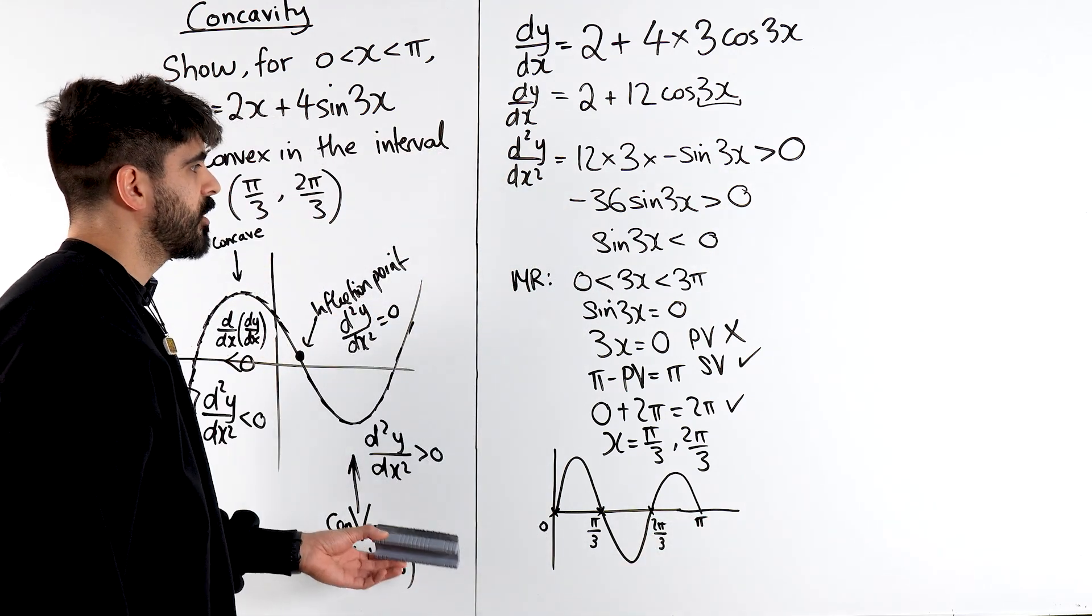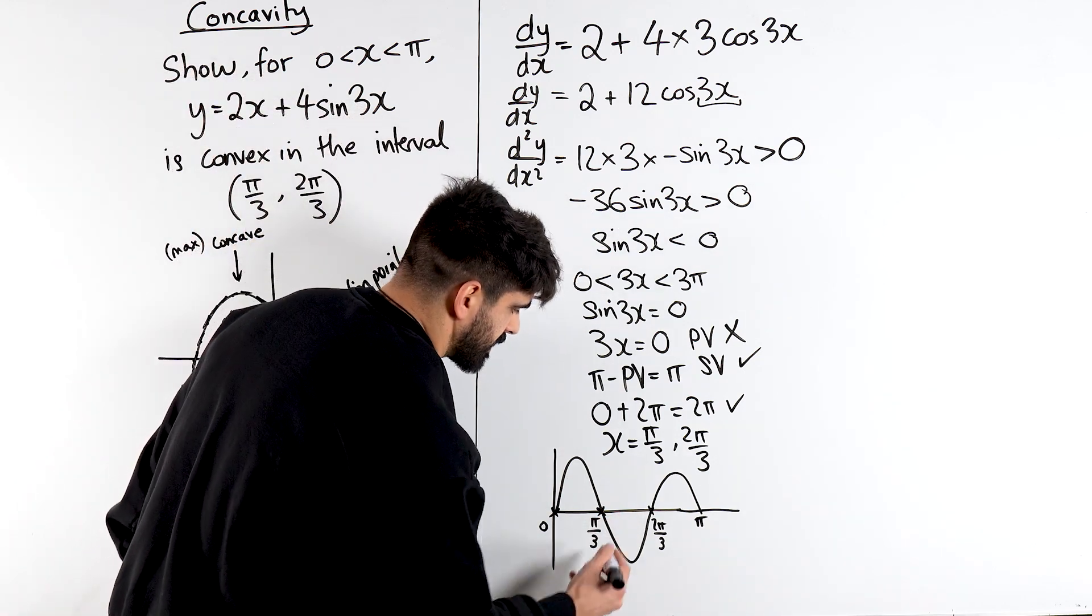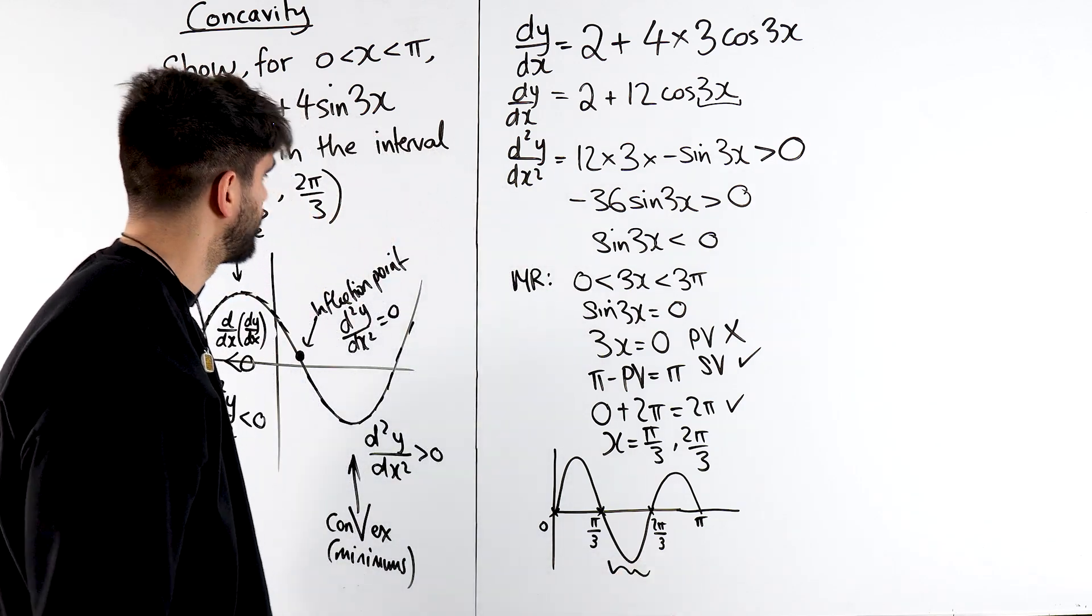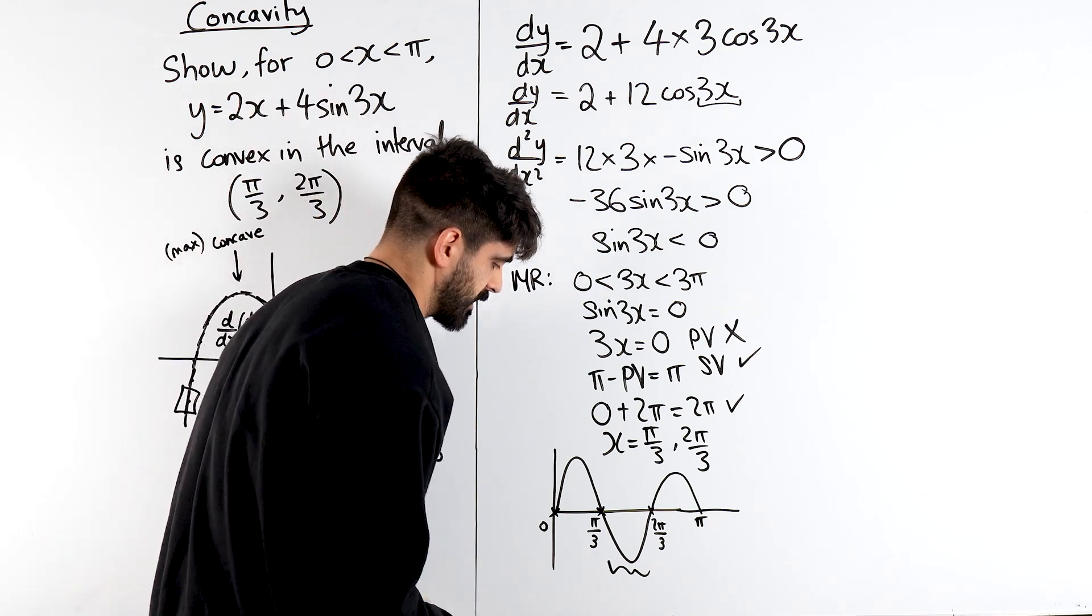Now we're only interested when the sin(3x) graph is less than 0. So we can see that it's less than 0 in this region between π/3 and 2π/3, which is what they wanted us to show.